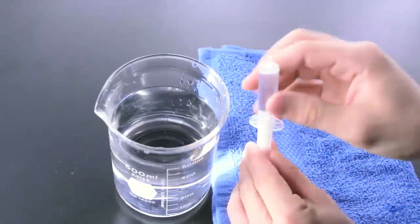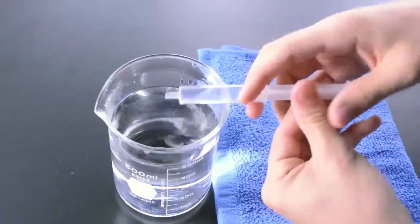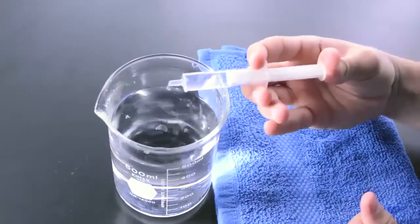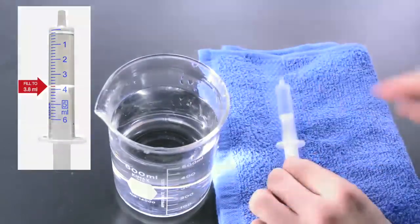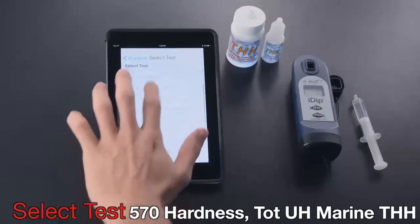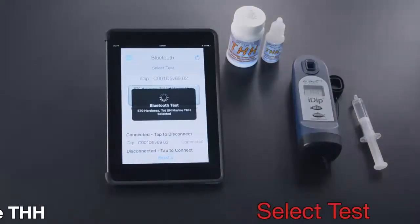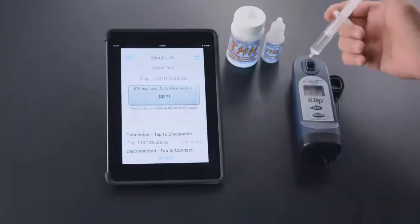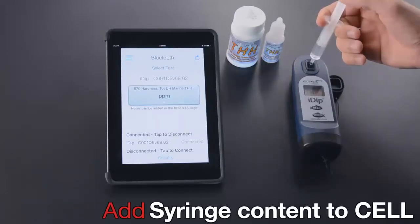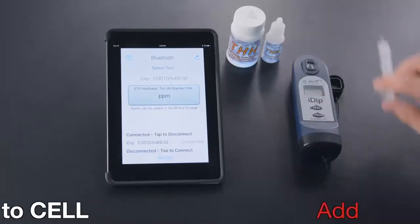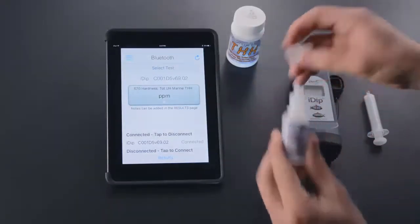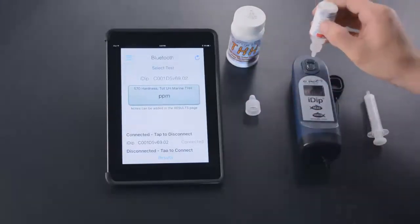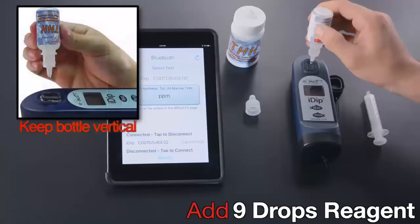Remove air bubbles, reduce to 3.8 milliliters, select test, add syringe content to cell. Add nine drops reagent.